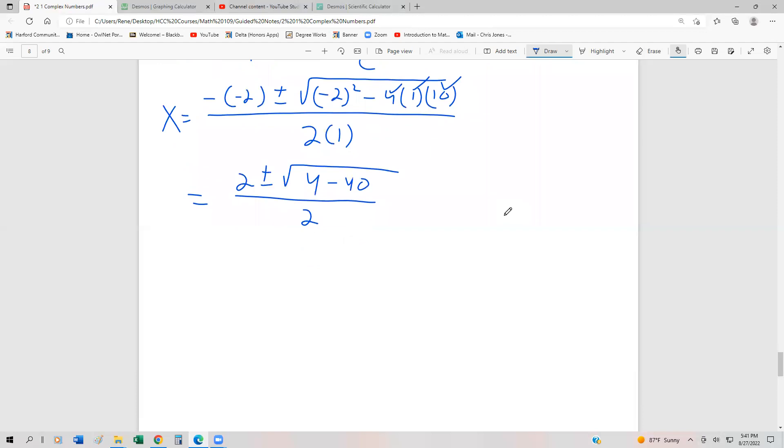4 minus 40 is negative 36. Here's where we can see that this is going to be a complex pair of solutions. To simplify negative 36 square root, that's the same as 36 times negative 1, or root 36 times negative 1, or 6i.